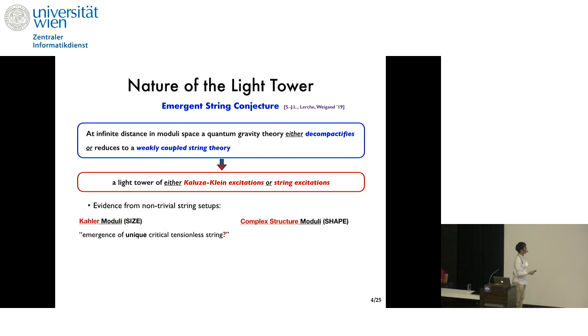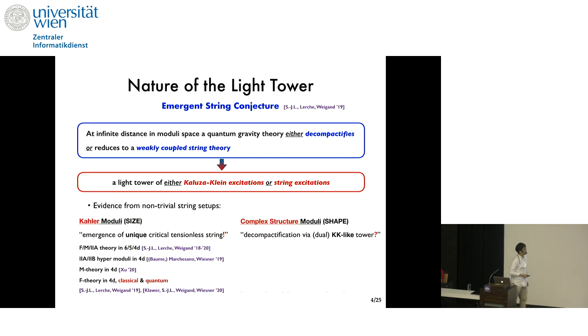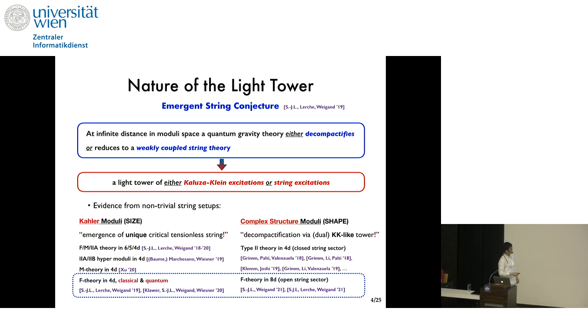A strong evidence arises from non-trivial string setups, both for the Keller and the complex structure moduli. As for the Keller moduli, perhaps the possibility of decompactification is rather natural, but emergence of unique critical string tension has to be very carefully addressed. The confirmed setups include F, M, and type 2 theories on Calabi-Yau 3-folds, M-theory on G2s, and eventually four-dimensional F-theory, both classical and quantum senses. As for the complex structure, it's often difficult to see how decompactification is realized in the theory. The closed string sector of type 2 theory had been systematically studied since 2018, but less was known about the open string sector, at least until last year. So today, we will focus on F-theory as a non-trivial setup, and I will report on our recent progress, both for the Keller and the complex structure sides, hoping that we can try to develop general intuitions behind the scenes.